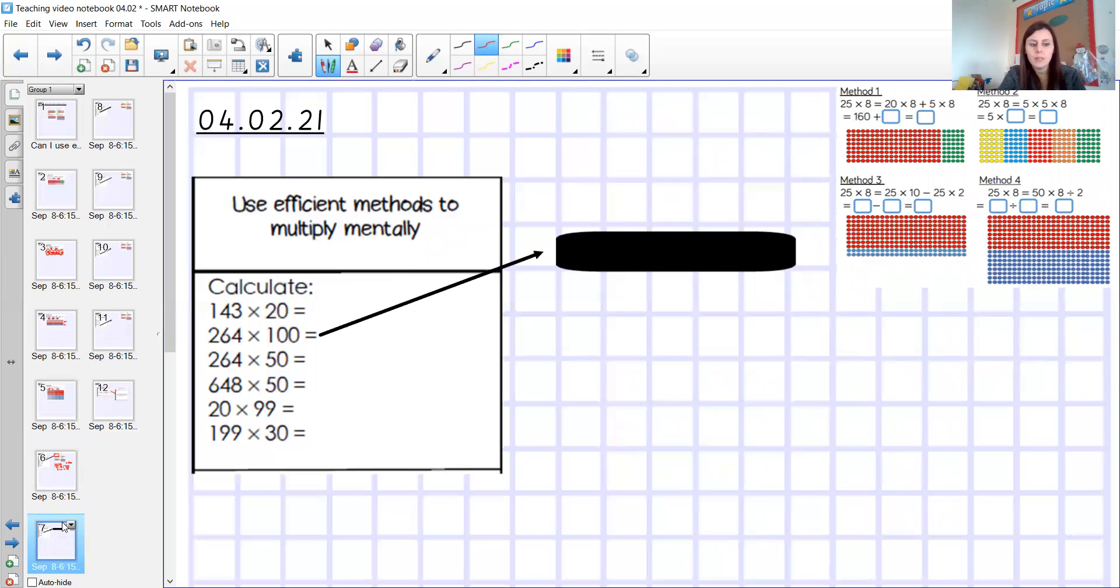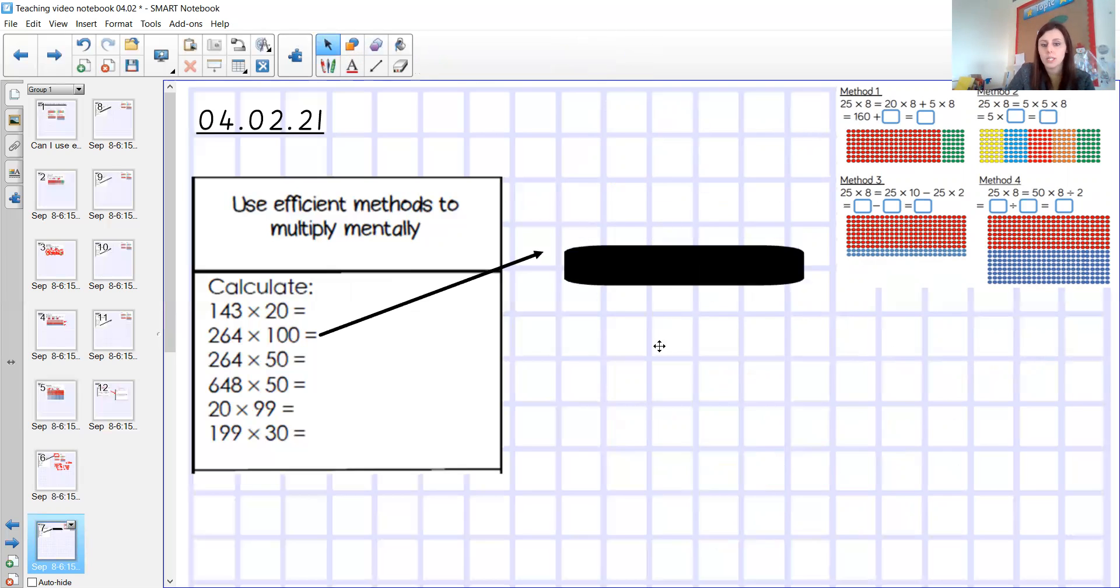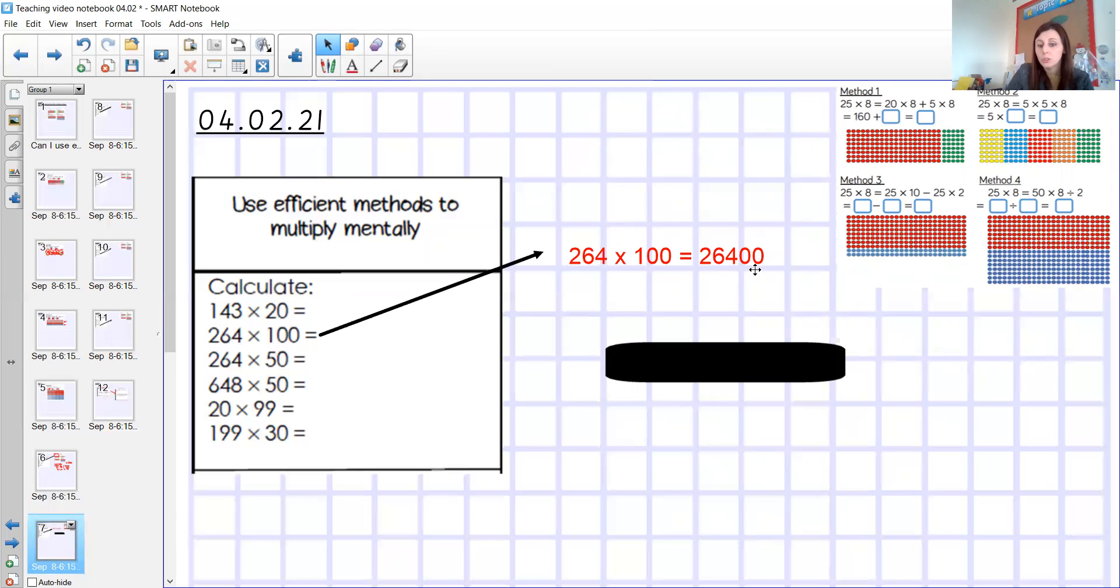So the next one then is 264 multiplied by 100. Well, actually, I don't really need to do any of those. I just know that if I'm multiplying by 100, then I need to be adding two zeros onto my answer, don't I? So I've got 264. If I was multiplying by 10, it would become 2,640. But I'm not. I'm multiplying it by 100. So I'm going to add on my two zeros. And then I'm going to be able to say 26,400. If you're doing something like that, you need to be very careful about your place value and where you're lining it up and thinking about it in your head. So just don't make a silly mistake and not carry enough zeros over.